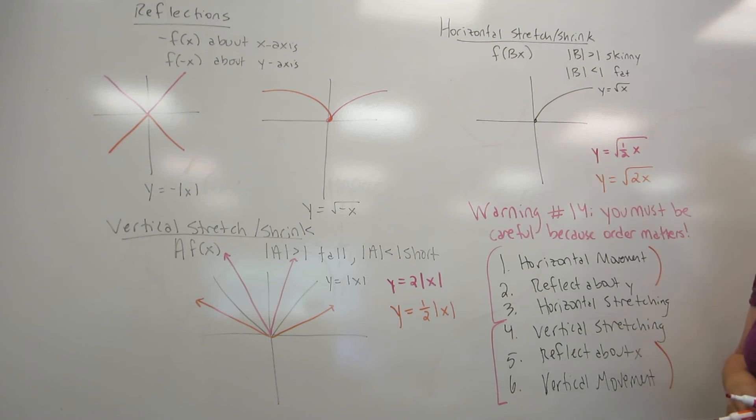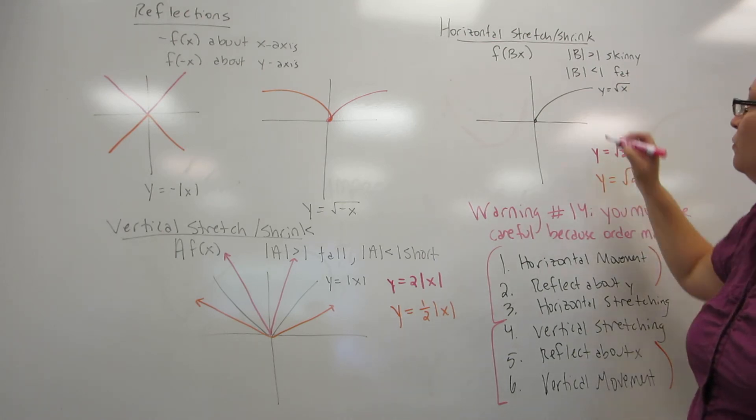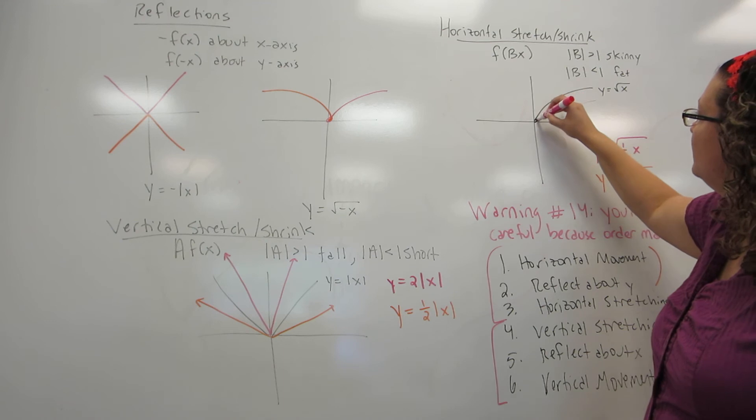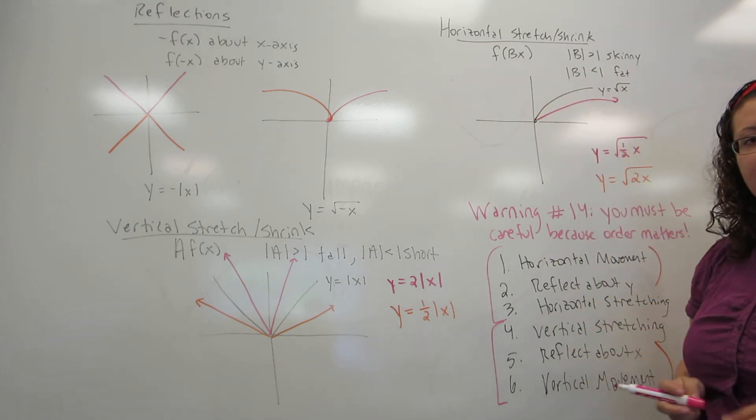So we're going to start with the square root of x as our example. Our first one is the square root of one half x. Because one half is a small number, it is going to make this equation fatter by a factor of two from the one half. This has the effect of making every x-coordinate twice as big.